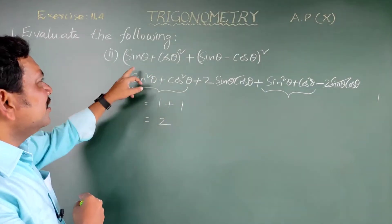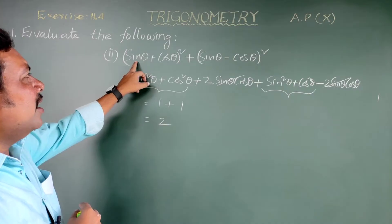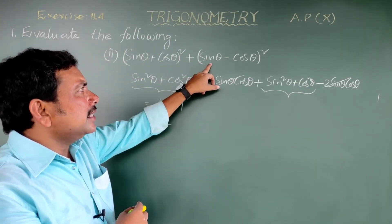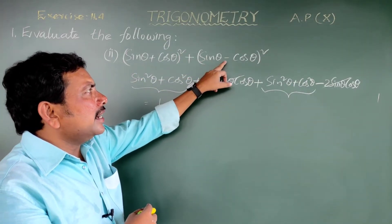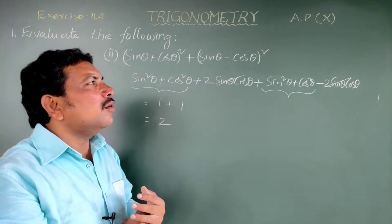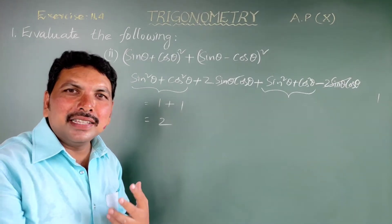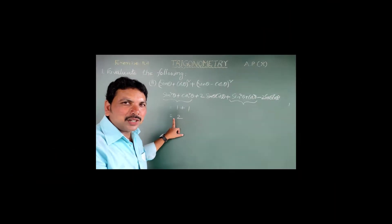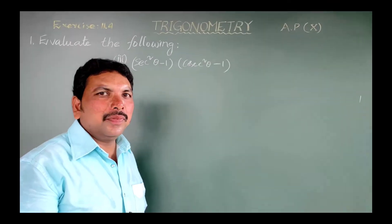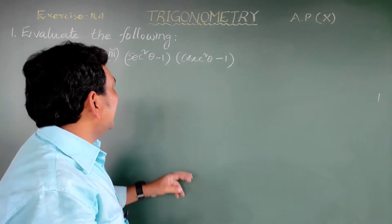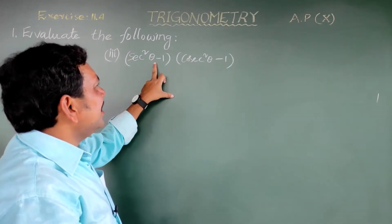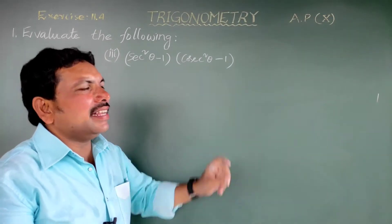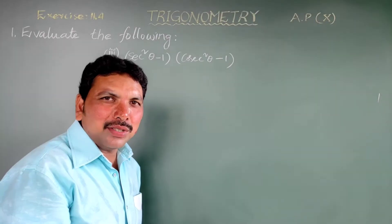So the value of (sin theta + cos theta)² plus (sin theta - cos theta)² is equal to 2. Next, third one: (sec²theta - 1) into (cosec²theta - 1).